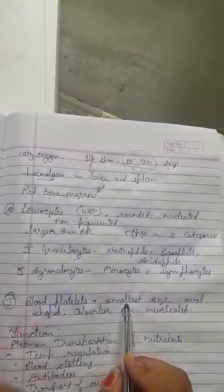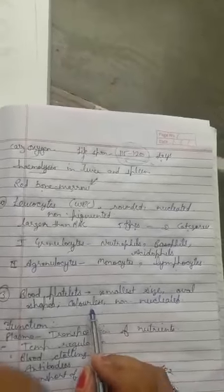Blood platelets are the third part of blood. Blood platelets are smallest size cells, colorless, non-nucleated, formed in bone marrow.